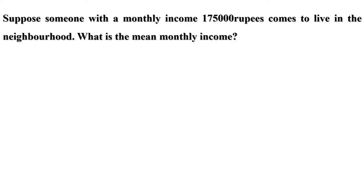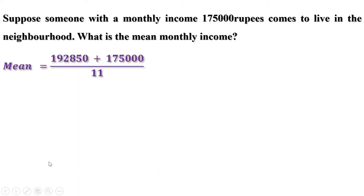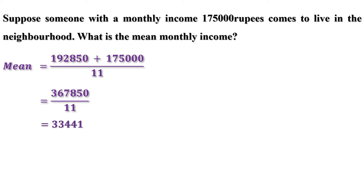Suppose someone with a monthly income of 1,75,000 rupees comes to live in the neighborhood. What is the mean monthly income now? To find it, we add all 11 incomes together and divide by 11. The sum of the 10 households is 1,92,850, and the 11th household has an income of 1,75,000. Adding together, we get 3,67,850. Dividing by 11, we get 33,441. The mean of 11 households is 33,441 rupees. Without the full details, giving only this mean would lead to the wrong conclusion that all households have a monthly income around 33,441 rupees.